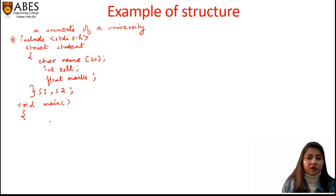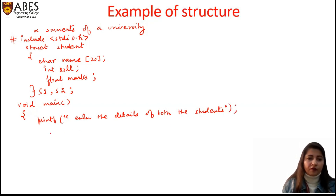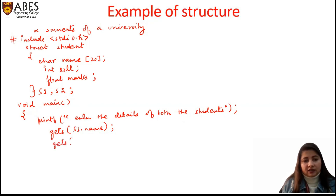We will input the information one by one. Printf: enter the details of both the students. To input the name of the first student, I'll use gets, which is used to input a string, so I write gets(s1.name). To input the name of the second student, gets(s2.name). To input roll number and marks I can use scanf — roll is of int type, marks is of float type.